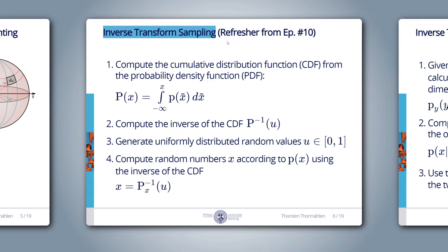But how can we generate sampling positions according to a chosen PDF? One popular solution is inverse transform sampling. Many programming languages provide ready-made functions to generate uniformly distributed samples, and inverse transform sampling can transform those into random numbers with other PDFs. The four steps are: (1) compute the CDF from the PDF by integrating from minus infinity to X; (2) compute the inverse of the CDF; (3) generate uniformly distributed random values u in [0,1]; (4) compute random numbers X using the inverse CDF.